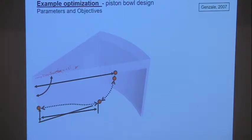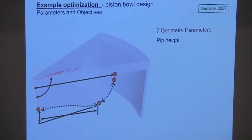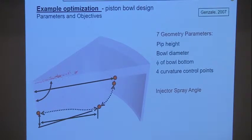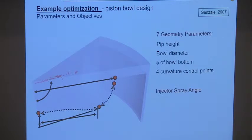Here's an example that Carolyn Gensale, now at Georgia Tech, did. She looked at piston bowl design with seven geometry parameters: pip height, diameter of the bowl, diameter of the bottom of the bowl, control curvature points along the piston bowl surface, the injector spray angle, and the swirl ratio. There's a wide range of possible choices across these parameters.